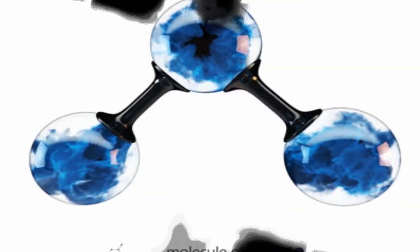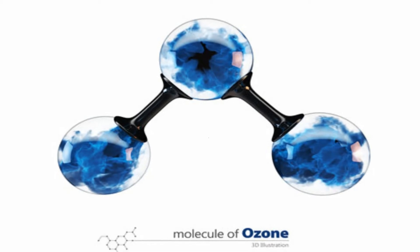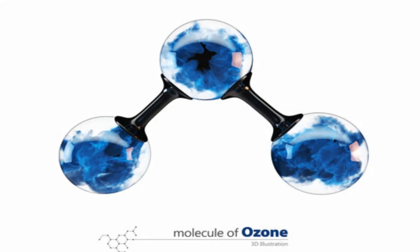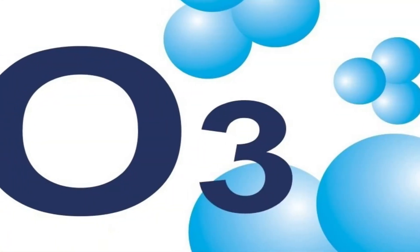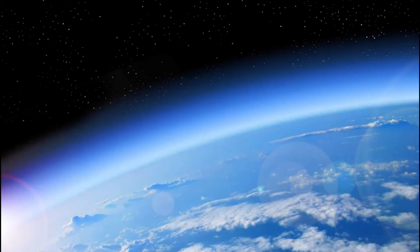What is ozone? Ozone is a naturally occurring molecule. An ozone molecule is made up of three oxygen atoms and has the chemical formula O3. Ozone is a highly reactive gas. It is both a natural and a man-made product.